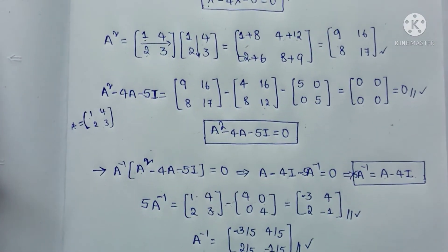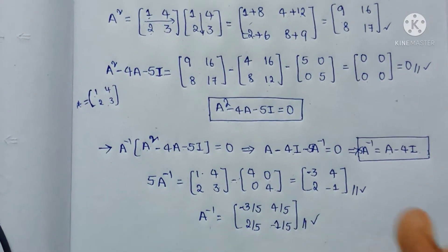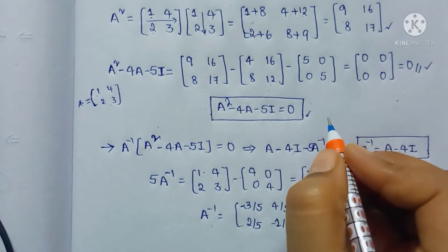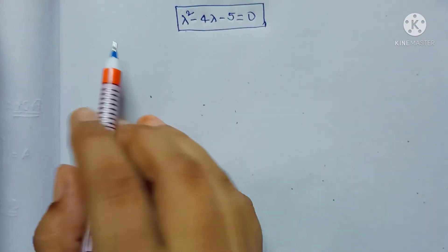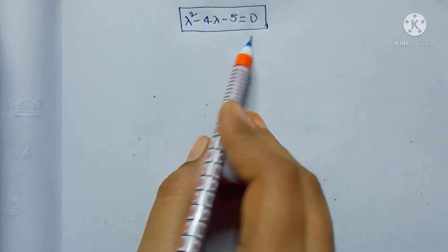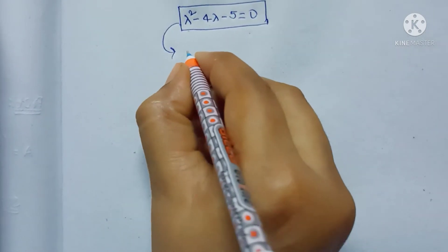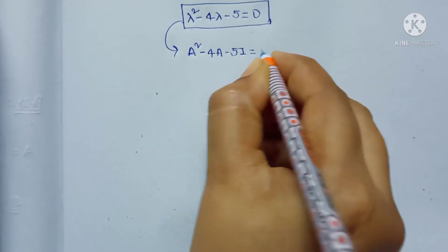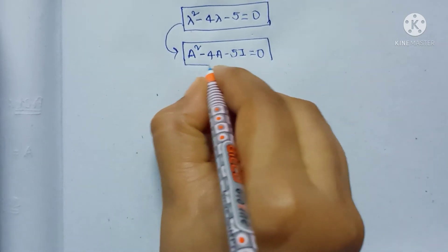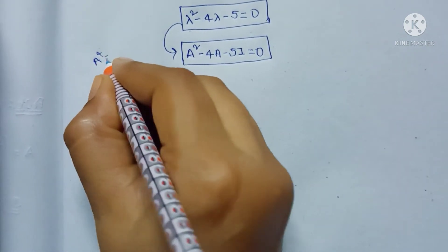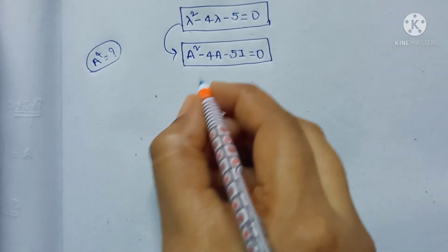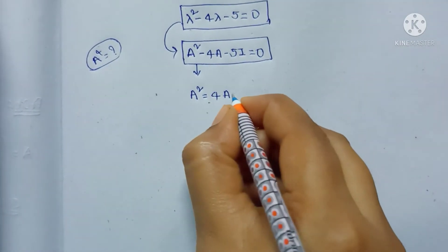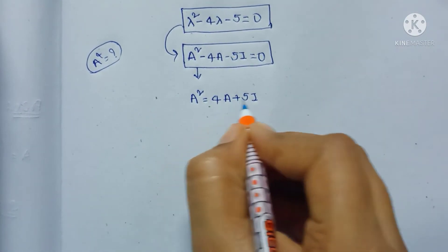In the given problem they are also asking for the value of A power 4. Now we will see how to find A power 4 by using the Cayley-Hamilton theorem. Here I wrote the characteristic equation of the given matrix. By applying Cayley-Hamilton theorem we write this matrix as A squared minus 4A minus 5I which is equal to 0. From this equation we know A squared is equal to 4A plus 5I.